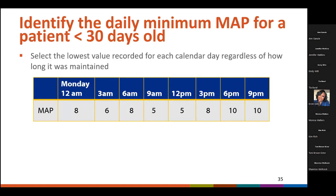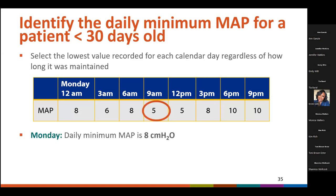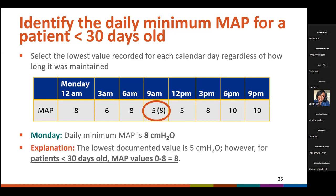In this example, the patient is less than 30 days of age. What is the daily minimum MAP for Monday? MAP is identified by the lowest value recorded for each calendar day, regardless of how long it was maintained. For Monday, the daily minimum MAP is 8. While the lowest documented MAP value is 5 at 9 a.m., remember that for patients less than 30 days of age, MAP values of 0 to 8 are considered to be 8. Therefore, in this example, the daily minimum MAP is 8.